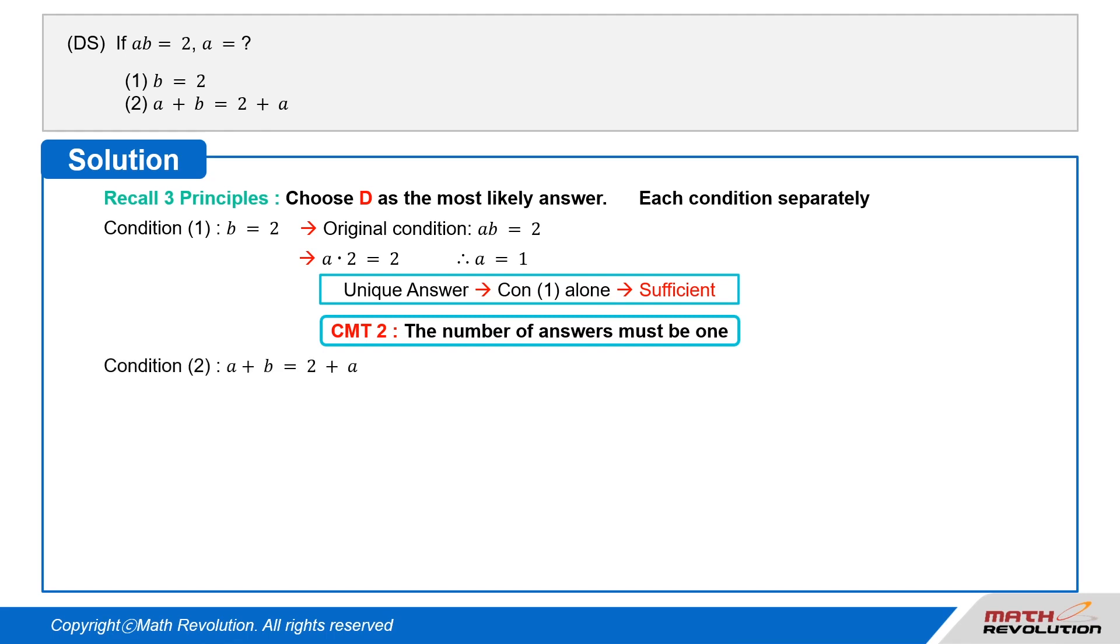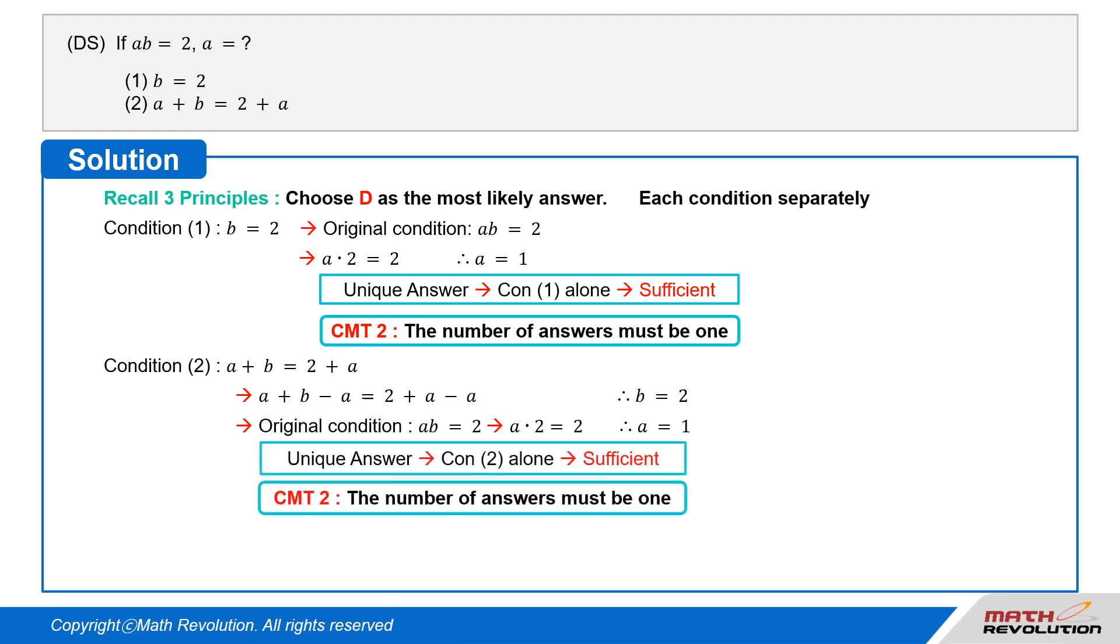Condition 2 tells us that A plus B equals 2 plus A. We can cancel out A from each side of the equation to get B equals 2. Substituting B equals 2 in the original condition A times B equals 2, we get A times 2 equals 2, or A equals 1. Since the answer is unique, the condition is sufficient by CMT2, which means that the number of answers must be 1.